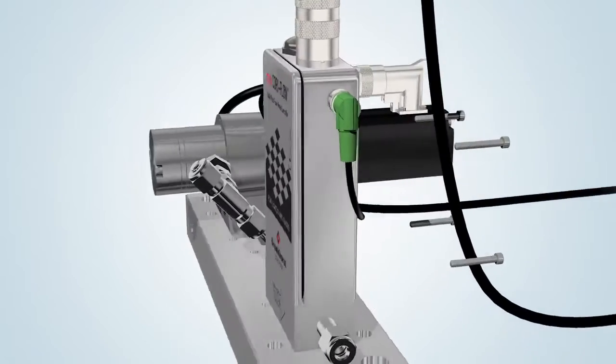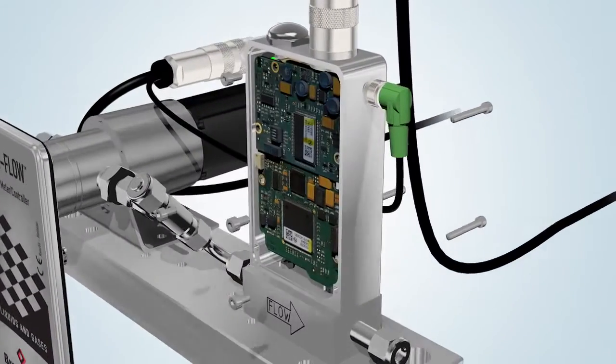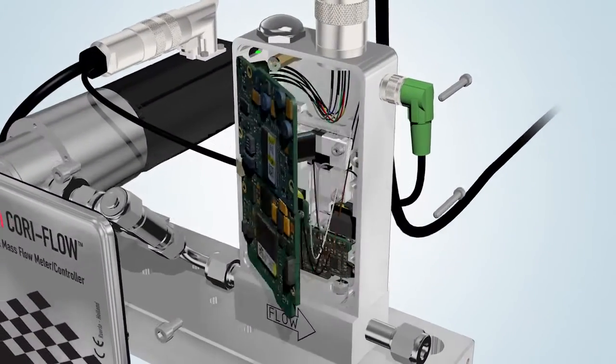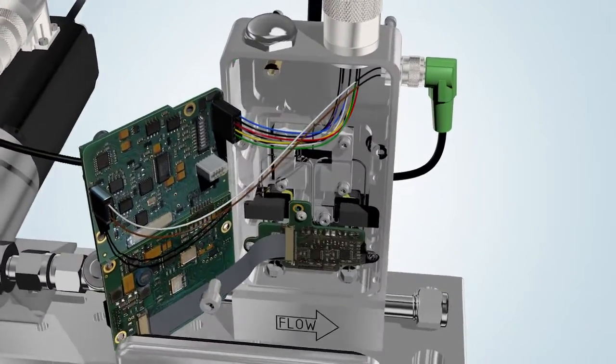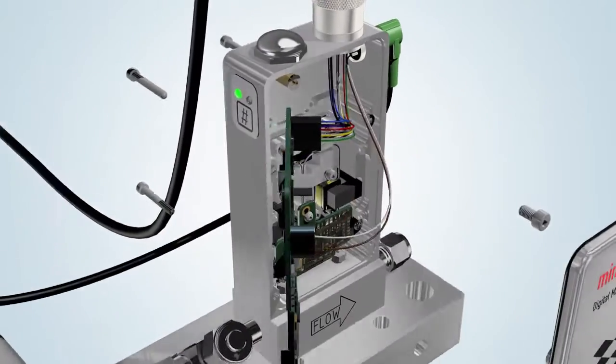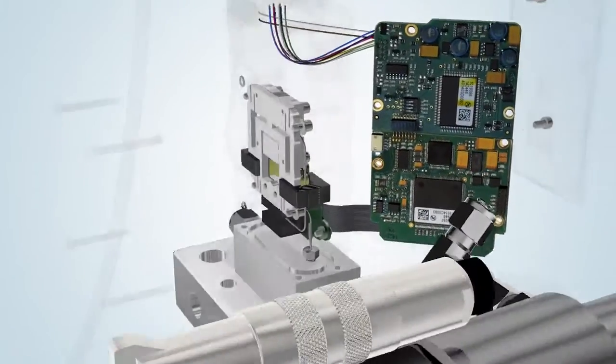Inside the robust Mini CoriFlow housing are the digital electronics, optical sensor and sensor tube. The internal diameter of the sensor ranges from 0.25 mm to 3.1 mm.